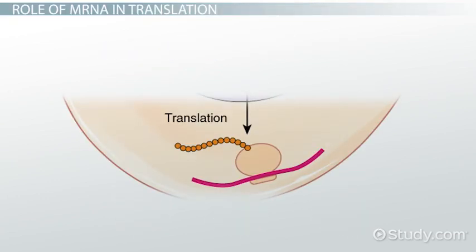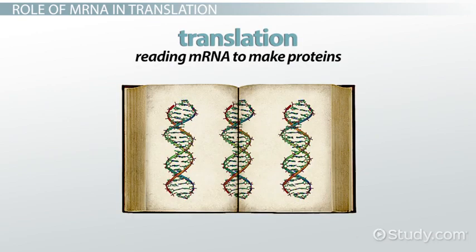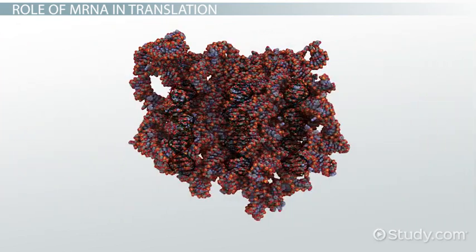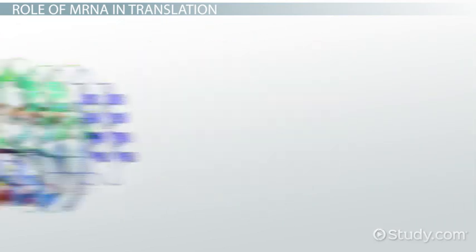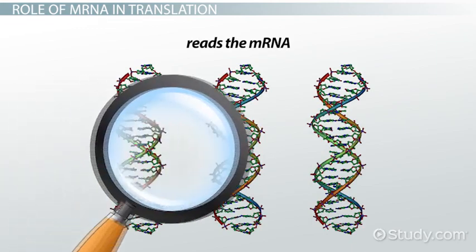Now the cell is ready to make proteins in a step called translation, which involves reading mRNA to make proteins. The mRNA leaves the nucleus and enters a ribosome—the site of protein synthesis. Each ribosome is made of a protein and ribosomal RNA, or rRNA, which reads the mRNA.